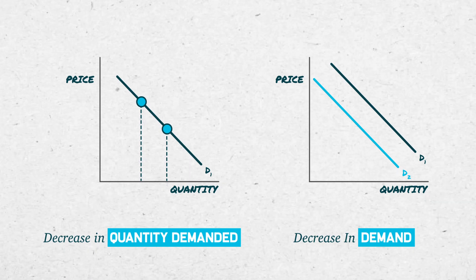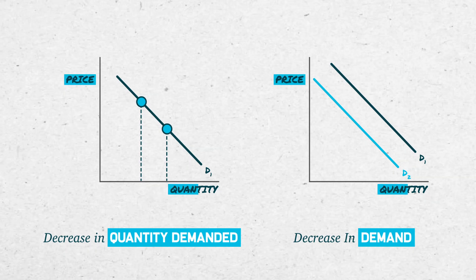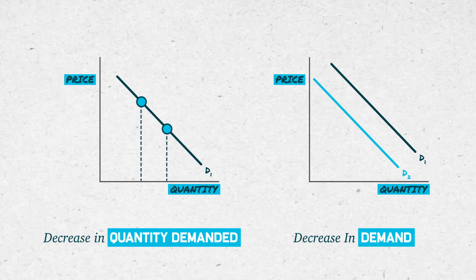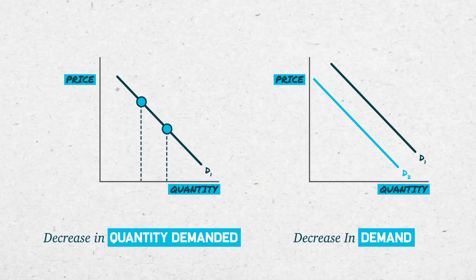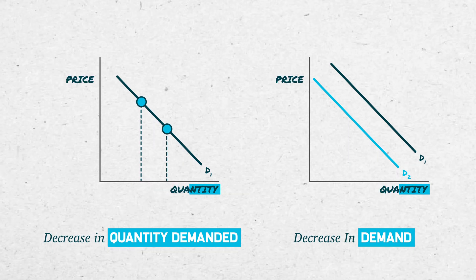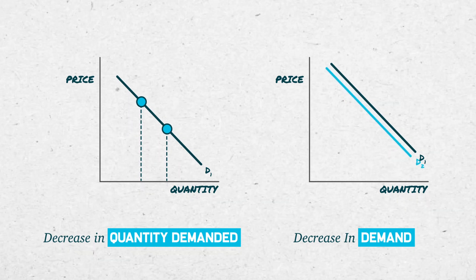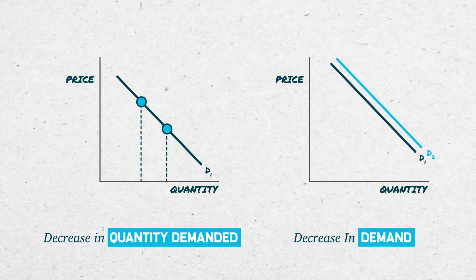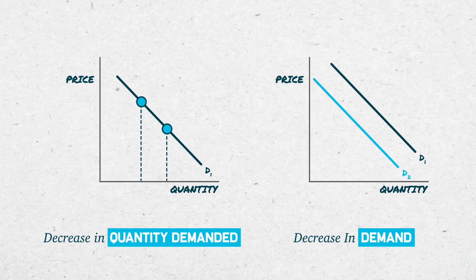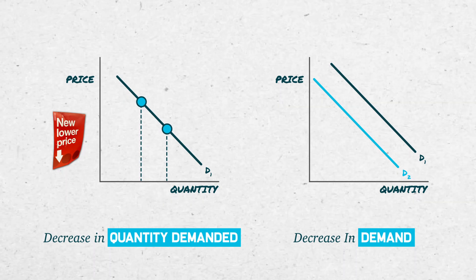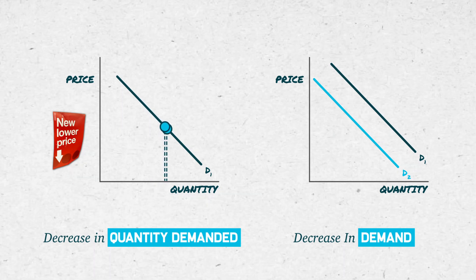An easy way to remember this is that our graph tracks changes in price and quantity. If a change occurs in a variable other than price or quantity — that is, something not measured on either axis — that will represent a shift in the demand curve. Price is on the vertical, or y-axis, so a change in price alone will cause movement along the curve.